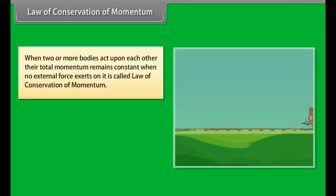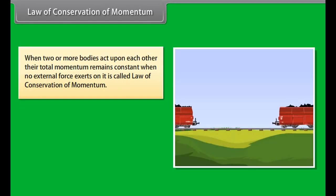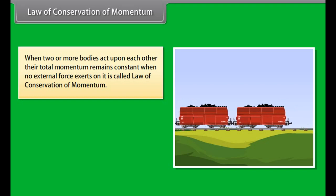Why does the cannon recoil? When ball is fired from a cannon, the force sends the ball forward and is equal to the force sending the cannon backward, hence the cannon is said to be recoiled.